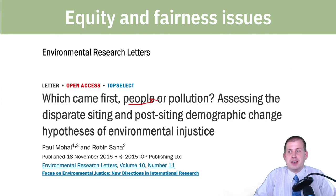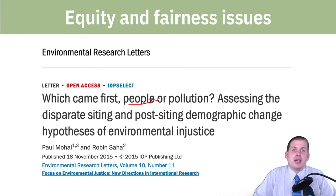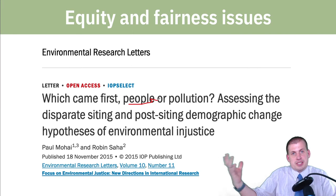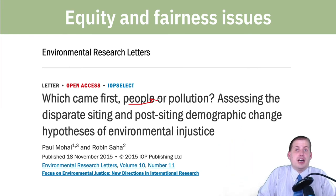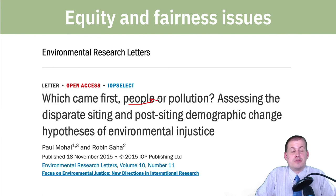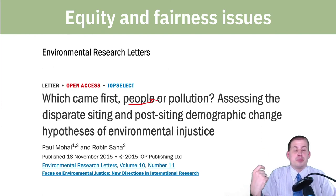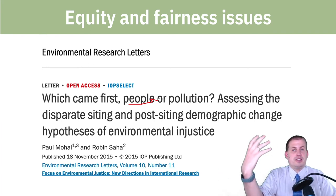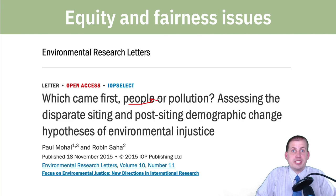Researchers debate whether it's a chicken-and-egg problem — whether Black people are moving to environmentally damaged areas — or whether Black communities were already there and polluters deliberately chose those locations to dump waste. What the researchers find is that it is the latter: polluters and firms that create environmental damage purposely choose poorer neighborhoods to dump their waste, causing all sorts of long-term environmental damage.